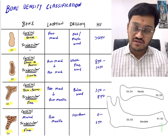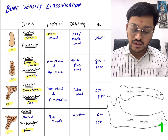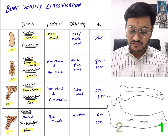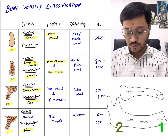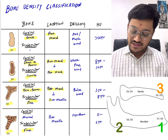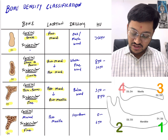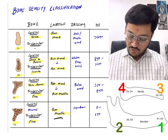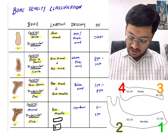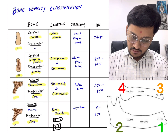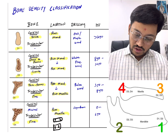D1 type bone is most probably always found in the anterior mandible. D2 bone is found in the anterior mandible as well as the posterior mandible region. D3 is found in the posterior mandible as well as the anterior maxilla. D4 is found in the posterior maxilla region. Looking at the diagram, D1 is here in the mandible, D2 here, D3 here, and D4 in the maxilla region.